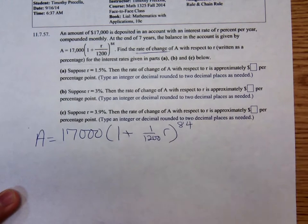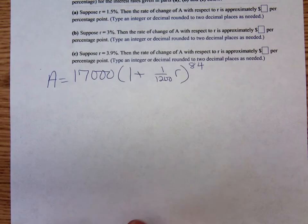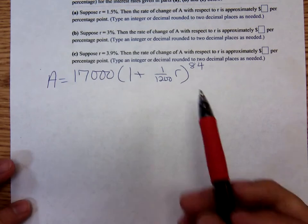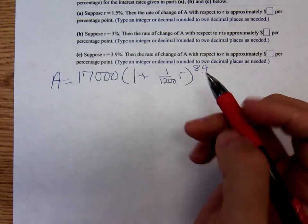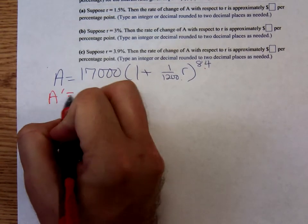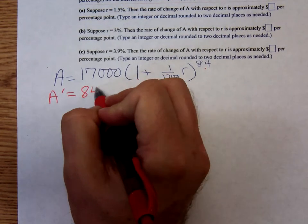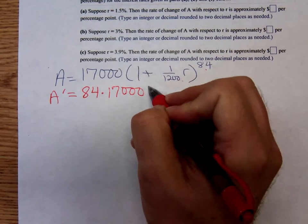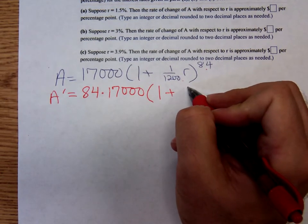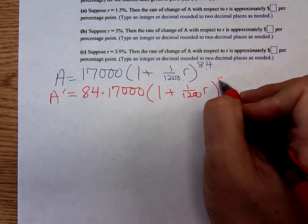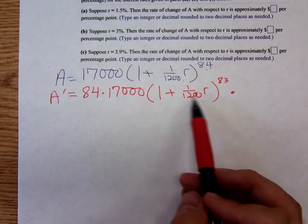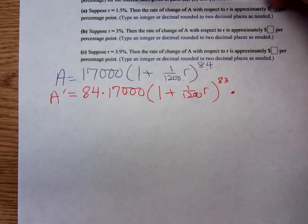Now I'm gonna find the derivative. Notice we have a quantity raised to a power, so hopefully you have your calculators ready because we're definitely gonna want to have them. Using the generalized power rule, we take eighty-four times seventeen thousand times one plus one twelve hundred r to the new power. What's the new power? Eighty-four minus one is eighty-three.